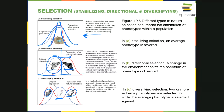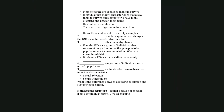Number two on the study guide is mutation — the key point is they're random. They may be beneficial, harmful, or neither. Either way, mutation leads a population out of Hardy-Weinberg equilibrium.